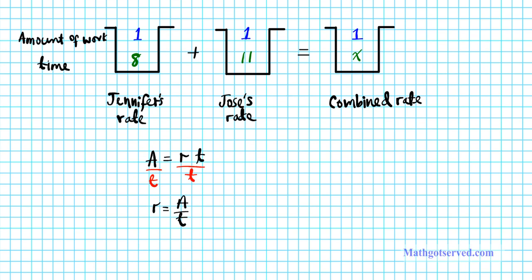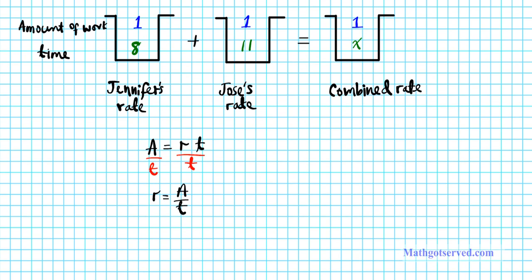So let's go ahead and set up the equation. Jennifer's rate, so the relationship here is division. Jennifer's rate is one over eight, eight hours to clean one attic, plus Jose's rate is one over 11, 11 hours to clean the same one attic,